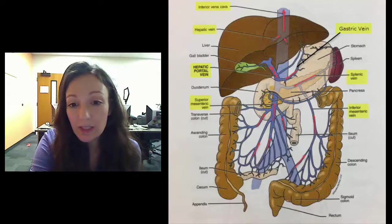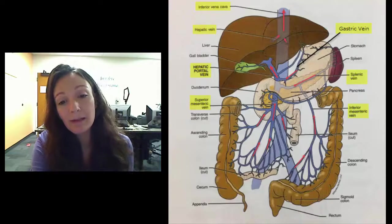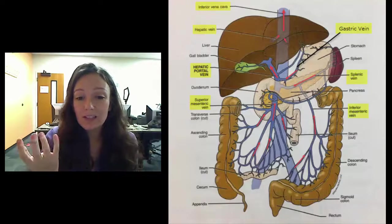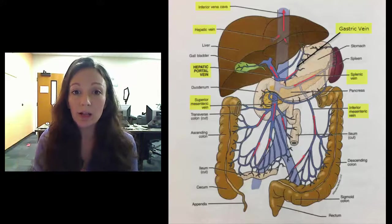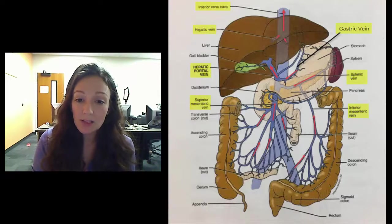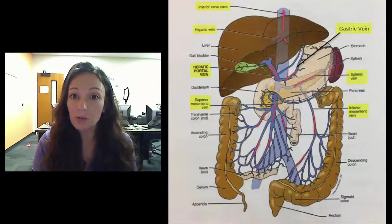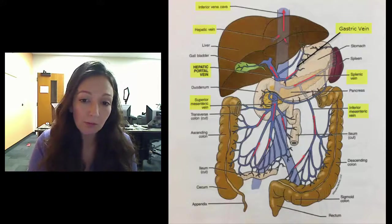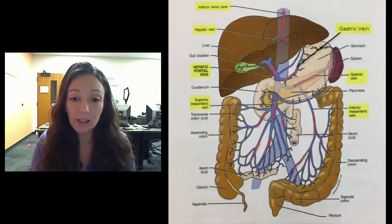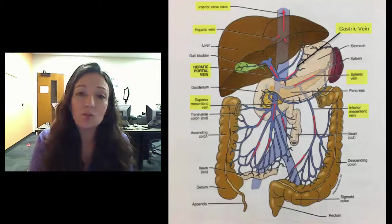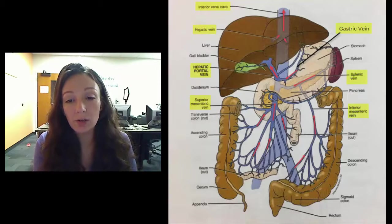Once this blood is in the liver in the second capillary bed, we've got cells in there that will take the nutrients out of the blood and store them. We've also got cells in there that can modify the contents of the blood. We've got cells in there that can remove pathogens from the blood. We've got cells in there that basically are purifying this blood so that it's ready to go back into our general circulation.